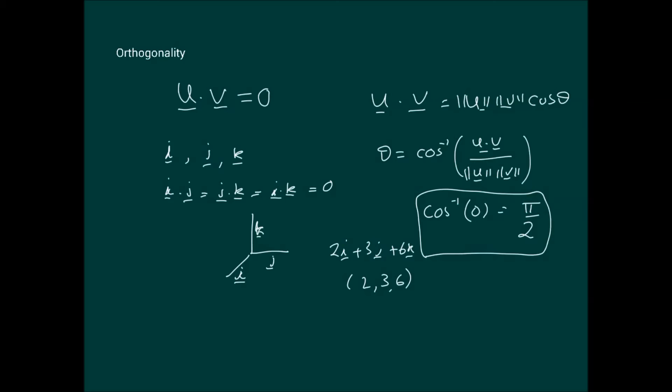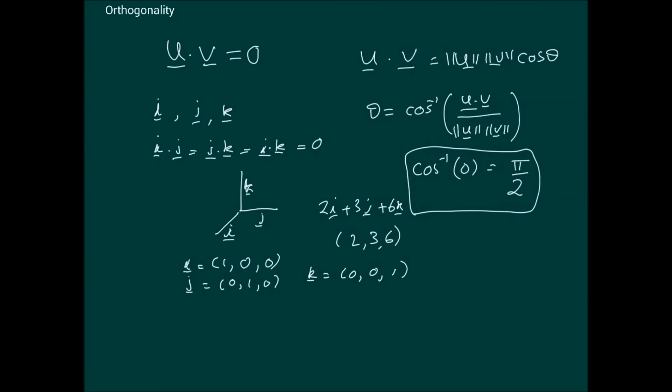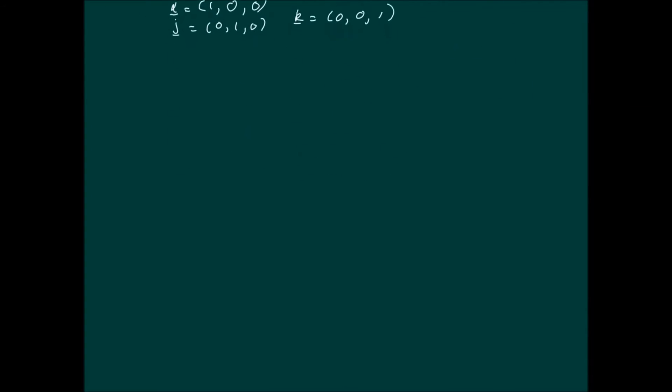Let's move further. The vector i, just for your information, the vector i for instance is 1, 0, 0 in 3D, and the vector j is 0, 1, 0, and the vector k is 0, 0, 1. Just for information. We're not going to be using this in this course, but that's how it is.